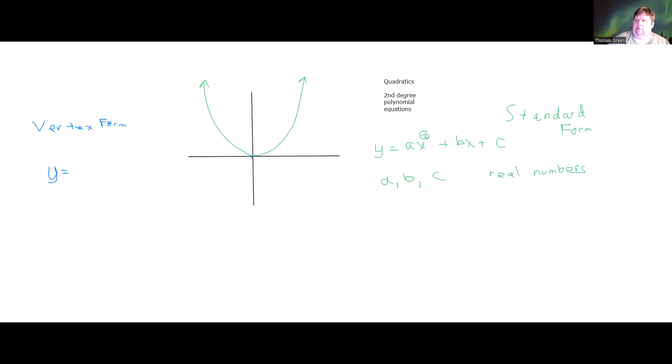As the name implies, the vertex form of a quadratic equation allows you to read the coordinates of the vertex readily. In vertex form, the same quadratic equation would be expressed as y equals a times the polynomial x minus h quantity squared plus k. And these two variables h and k here are the coordinates of the vertex for the polynomial.